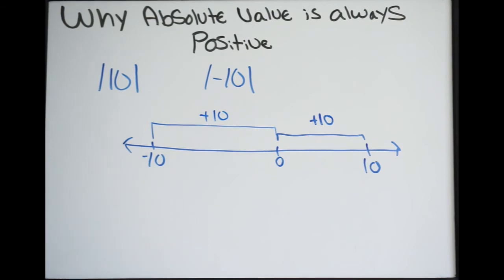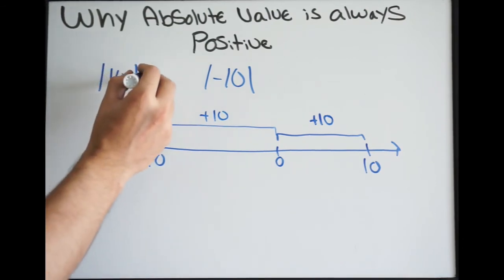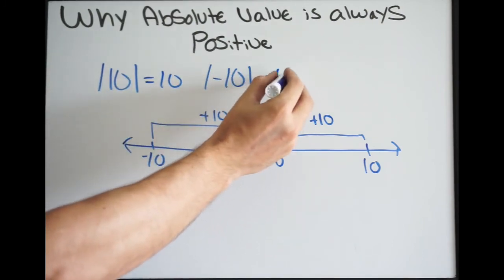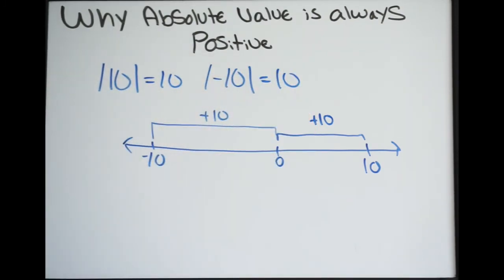So again, we are talking about distance. Distance cannot be negative, hence why absolute value will always be positive. Think of it in terms of distance.